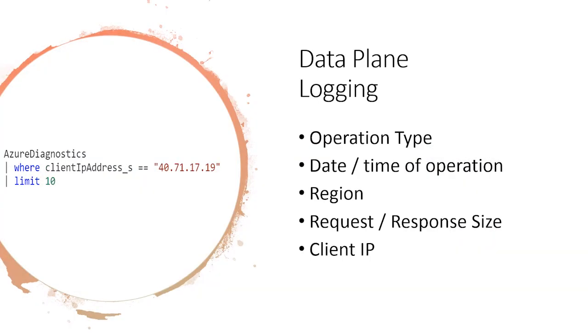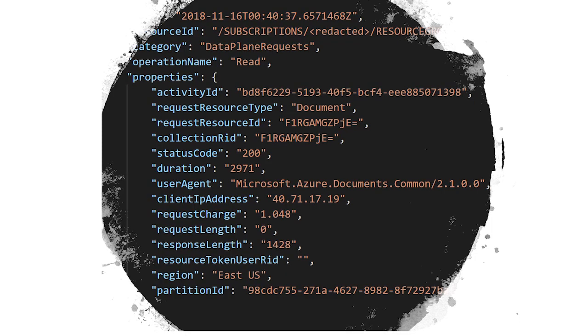How do you look at the data once it's actually collected? What I typically use is log analytics, which I had turned on in the configuration. Here I have a sample query: from Azure Diagnostics, where my client IP has sent some number of requests to Cosmos DB — those requests get logged. On the next slide, I can show you what this actually looks like when it comes out in log analytics.